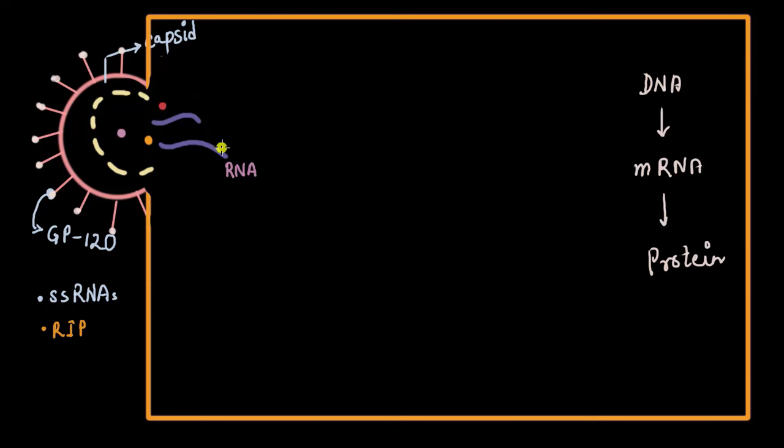Well, the virus knew already that it has to do that and therefore, it carries the weapon along with it. And what is that weapon to convert RNA to DNA? It is an enzyme called reverse transcriptase. Now you can probably guess where this R in RIP comes from. This R stands for reverse transcriptase. It is a very interesting enzyme and has dual function.